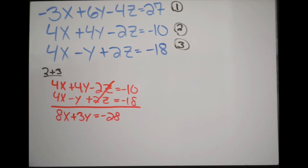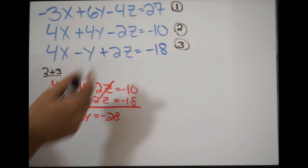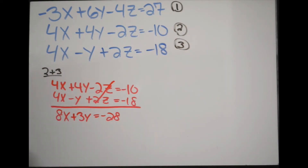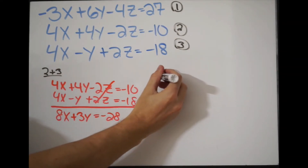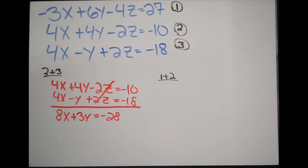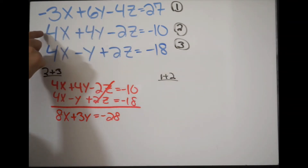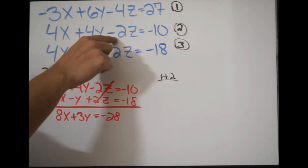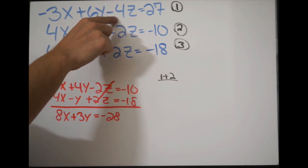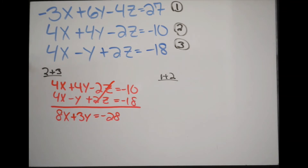Now we need to do this with another two of our original equations to bring it down to a 2x2. Since I eliminated z, I need to make sure I eliminate z again with the next pair. You can pick equations 1 and 3, or 1 and 2 — just don't pick 2 and 3 again. I'm going to pick equations 1 and 2. I'll multiply equation 2 by 2 so I get negative 4z, matching the negative 4z in equation 1. Then using subtraction will cancel out the z's, since negative 4z minus negative 4z equals zero.